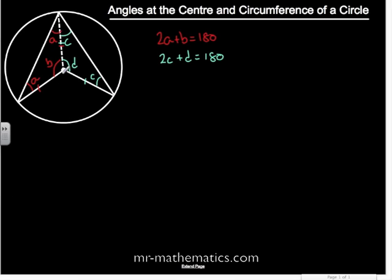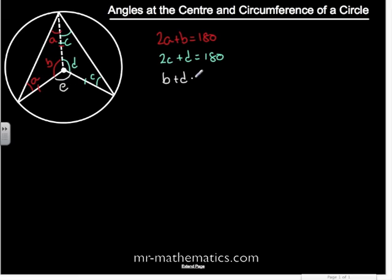And the angle at the center to make that angle about a point, we'll call that angle E. So B plus D plus E must make 360.